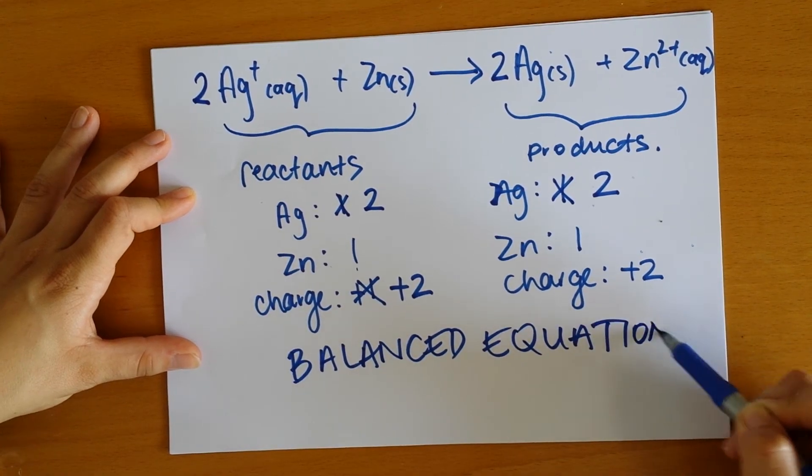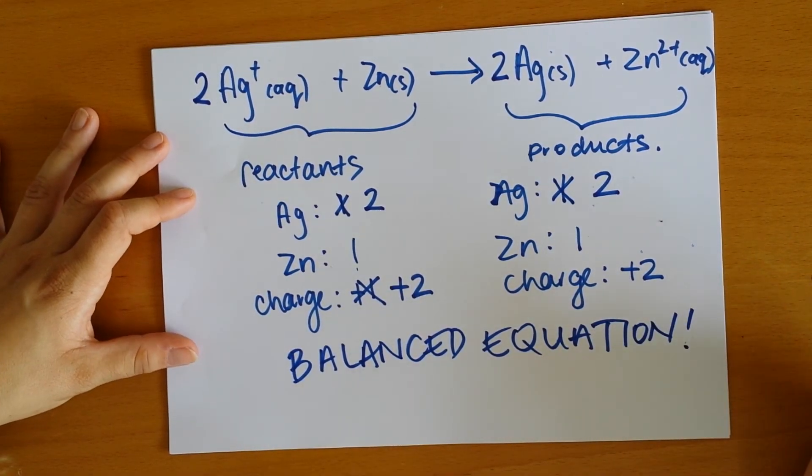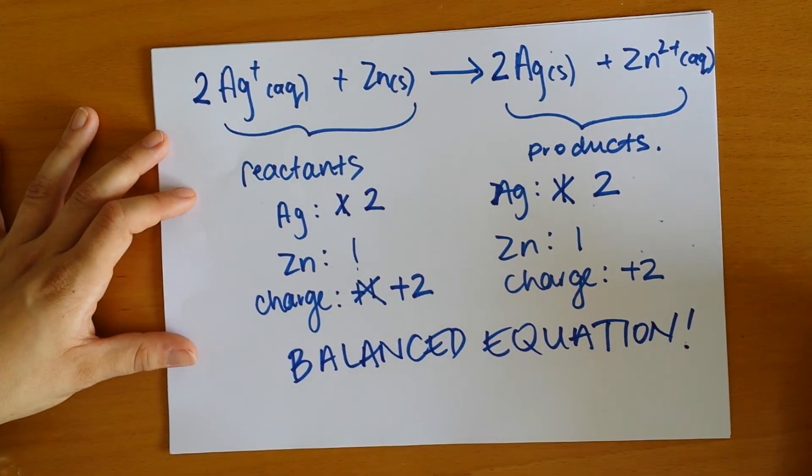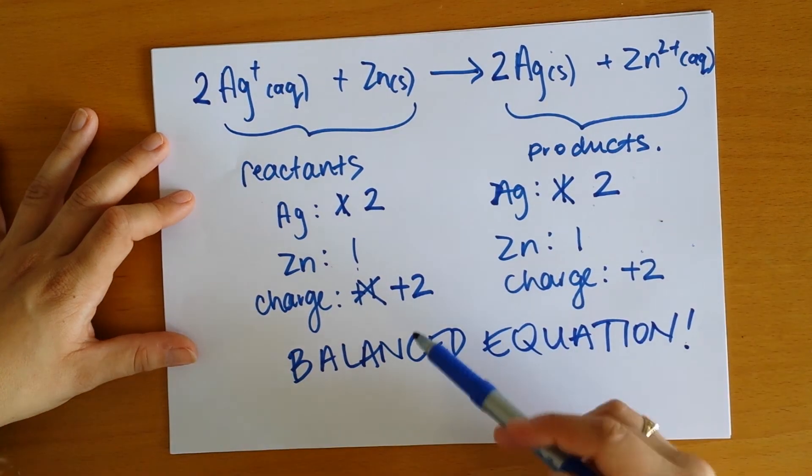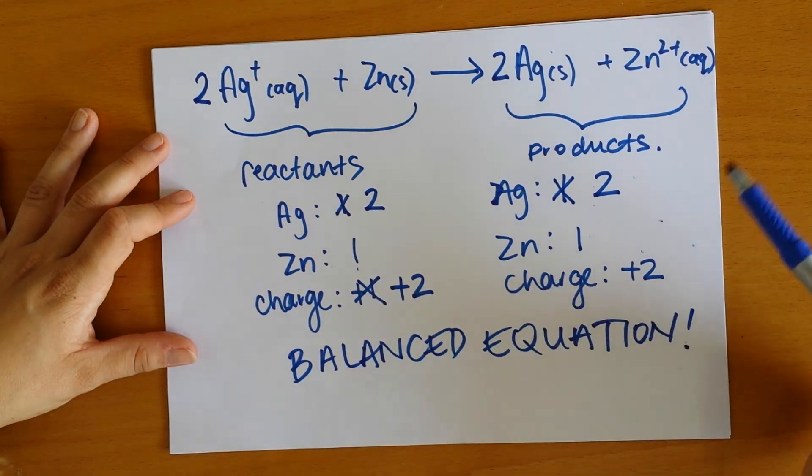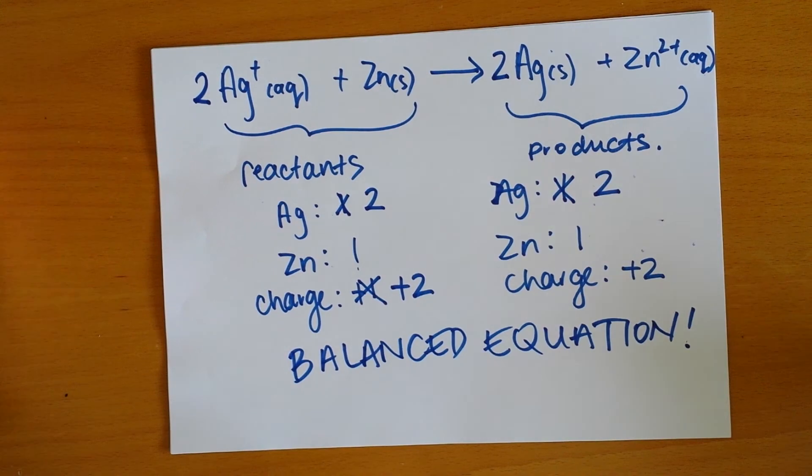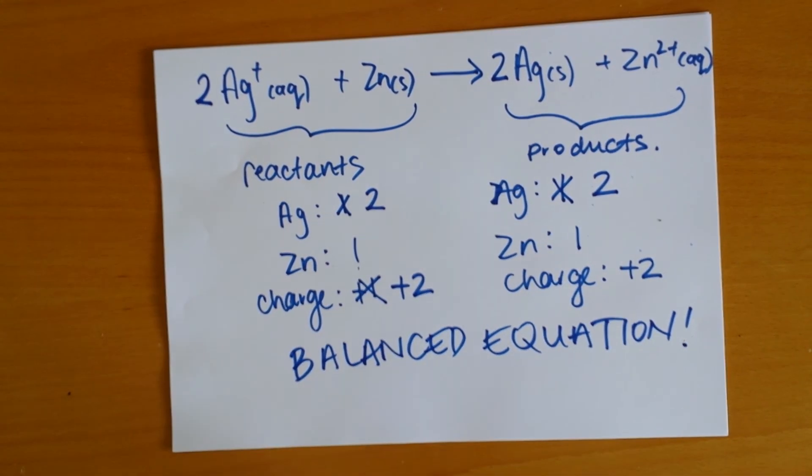Make sure, particularly in redox processes or anything with ions present, that you're balancing charge as well. It doesn't matter what the charge is - it could be zero, minus two, or plus seven. You just need to make sure they're the same on both sides of the equation to ensure you've got a balanced equation.